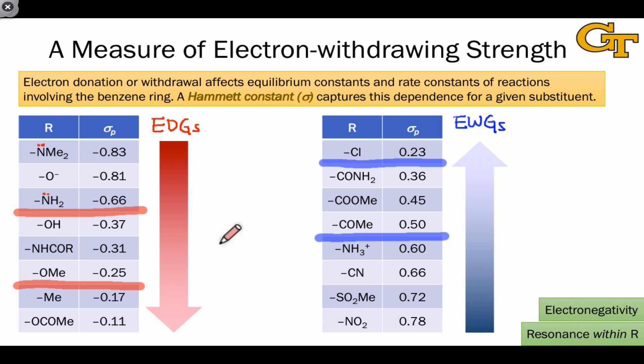Ultimately, the exact positions of groups within these tables isn't terribly important to understand. Instead, the most important thing is to recognize the roles of electronegativity and resonance within the R group in the strengths of electron-donating and withdrawing groups. We can make educated guesses about the relative electron-donating or withdrawing power of two substituents by thinking about these two structural factors.